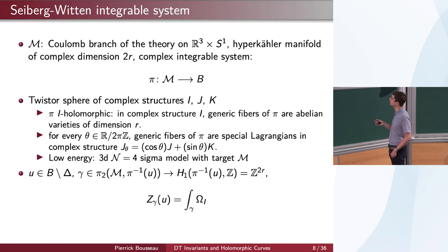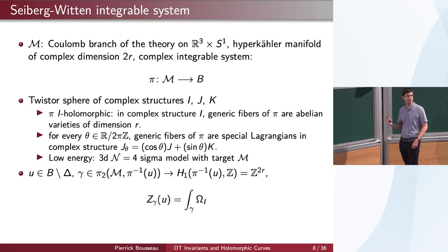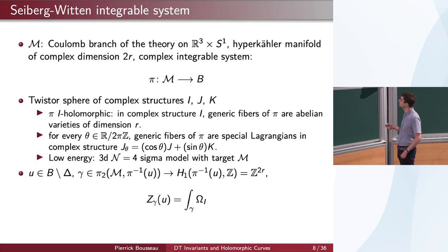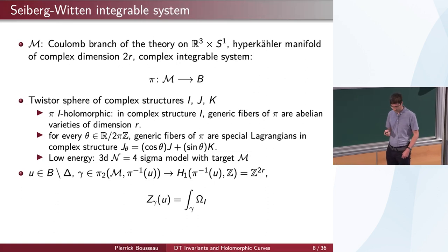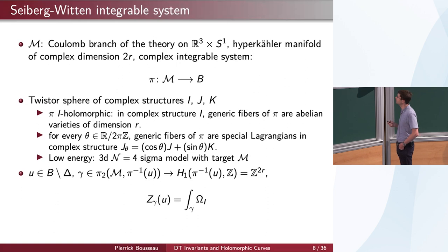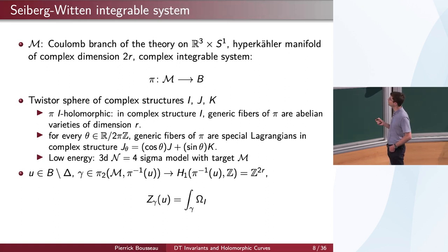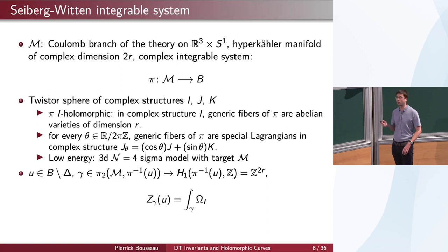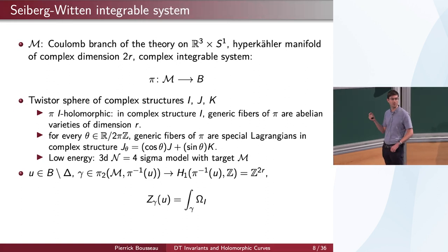In one complex structure this map is holomorphic and the fibers are holomorphic subvarieties. But in some different complex structures the picture looks different. If I fix an angle θ and consider the complex structure J_θ, which has some linear combination of complex structures J and K with coefficients cos θ and sin θ, then with respect to this complex structure the fibers will be special Lagrangians. So in one complex structure it looks like some holomorphic fibration, with respect to a different one it looks like some real Lagrangian fibration. From a physics point of view, the characteristic property of this hyper-Kähler manifold is that it describes the low-energy three-dimensional theory obtained by compactifying your four-dimensional theory on a circle.